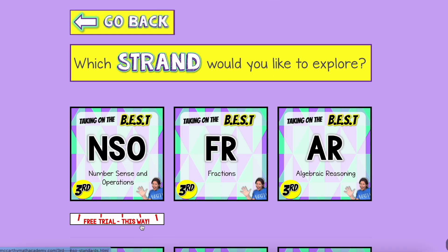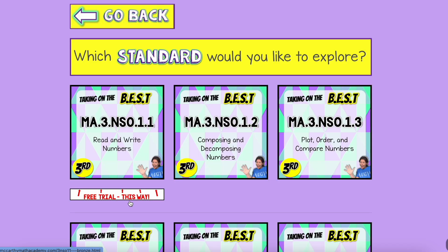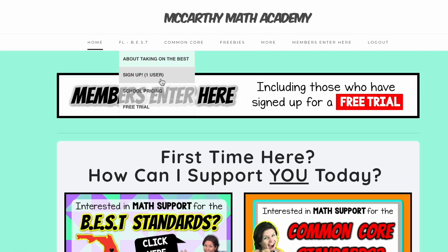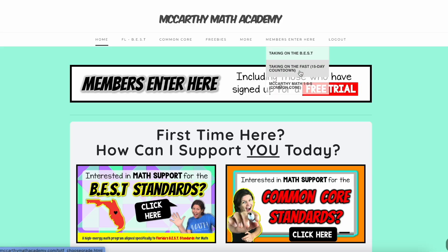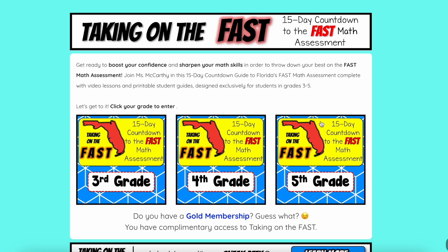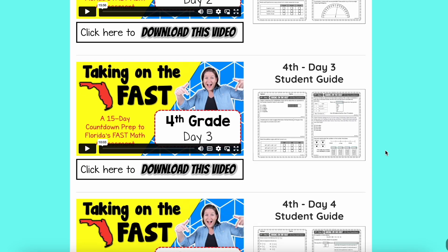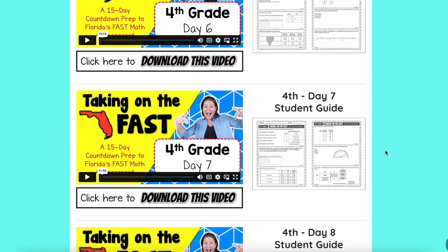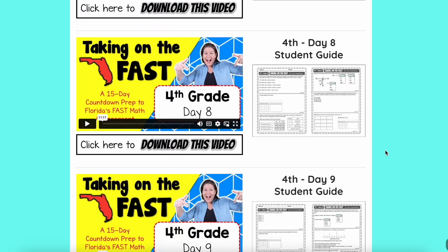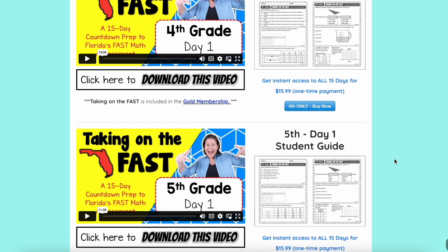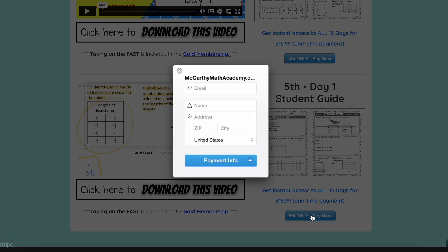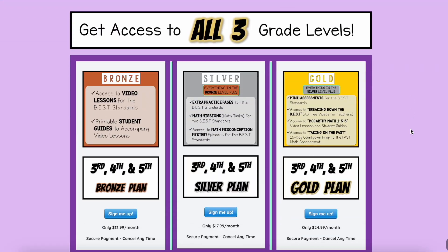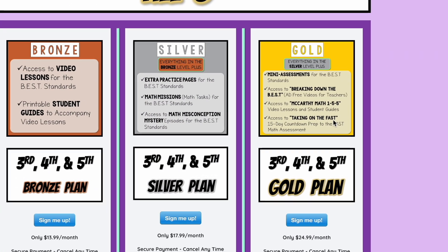Would you like to take Taking on the Best for a test drive? You can sample one standard per grade to find the right plan for you. Do that by simply requesting a free trial. And if you're gearing up for the final fast math assessment of the school year, definitely check out Taking on the Fast, a 15-day countdown series with video lessons and fast style math problems. Start with a sneak peek of day one, and when you're ready, you can make a one-time purchase. And if you're thinking about the gold plan for Taking on the Best, good news, Taking on the Fast is included in your membership.